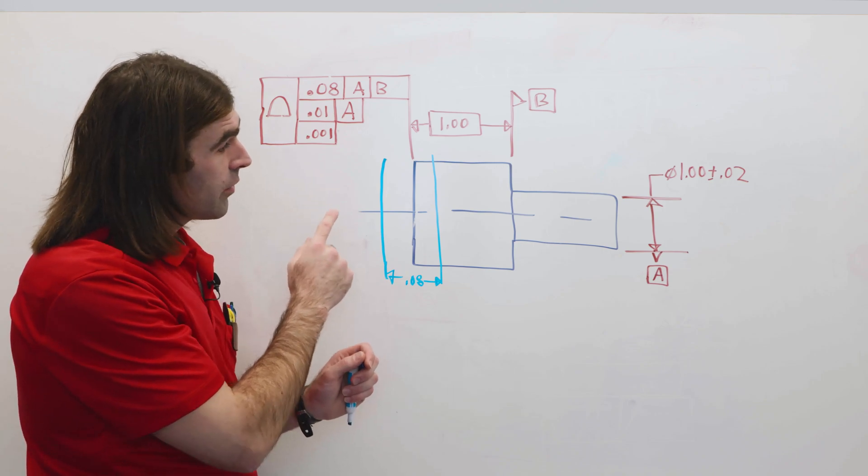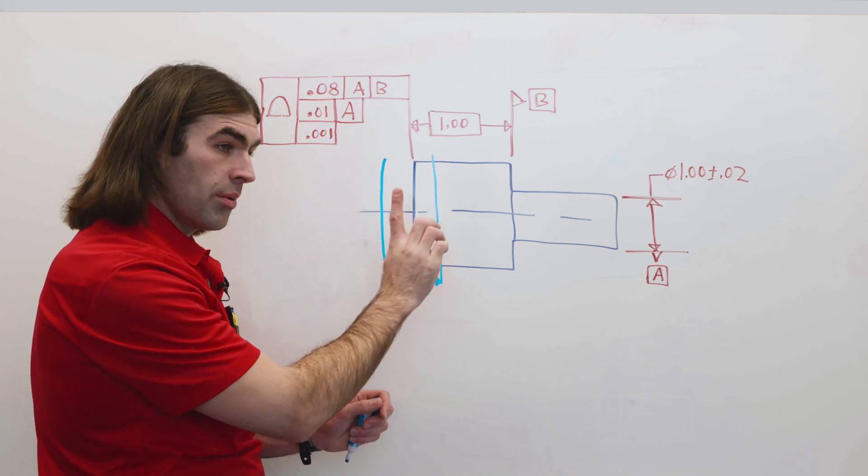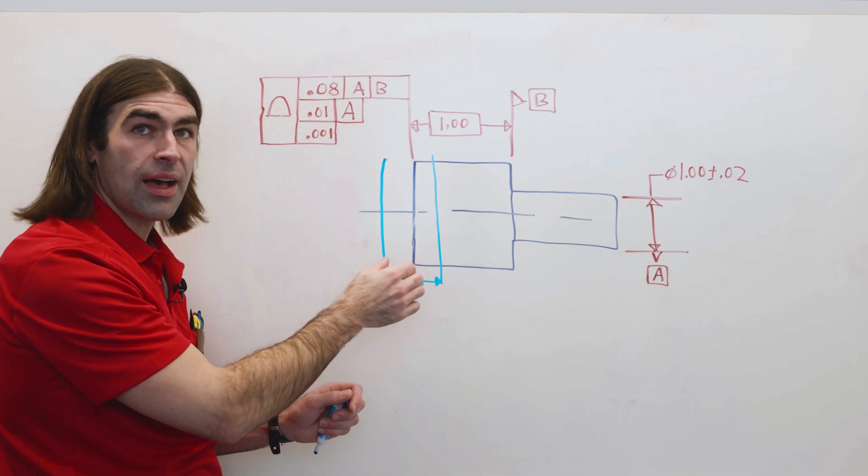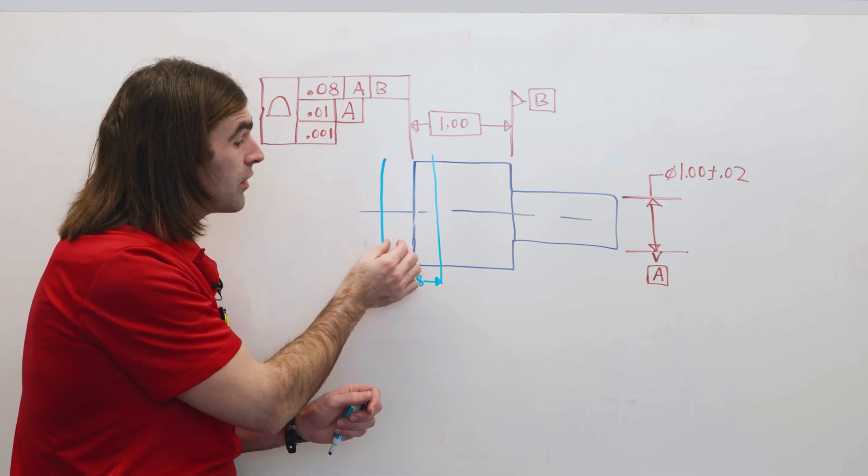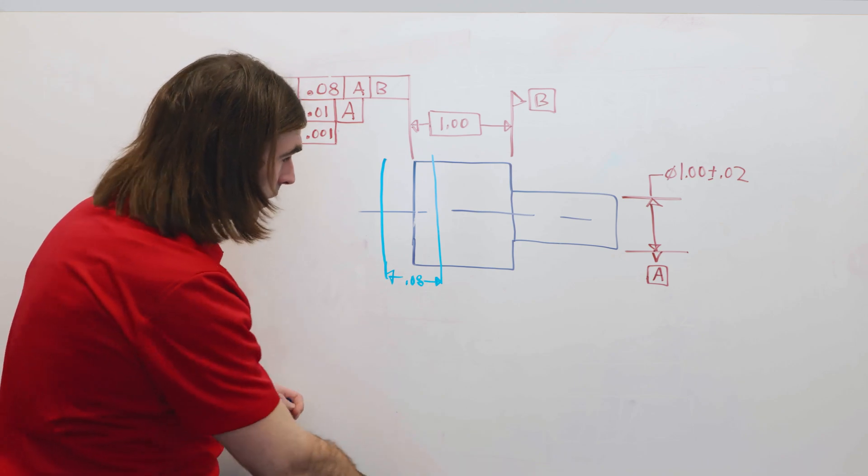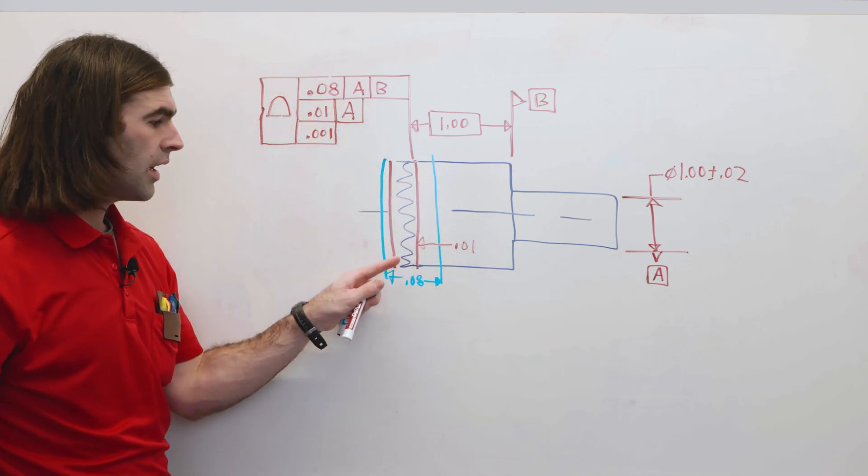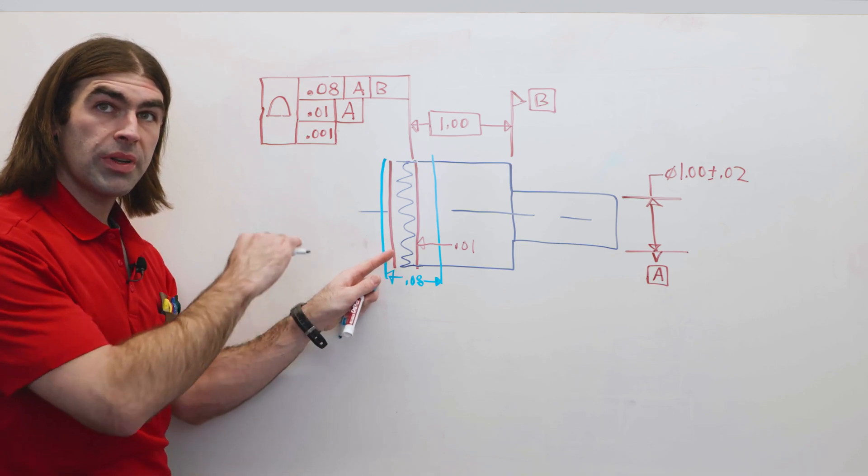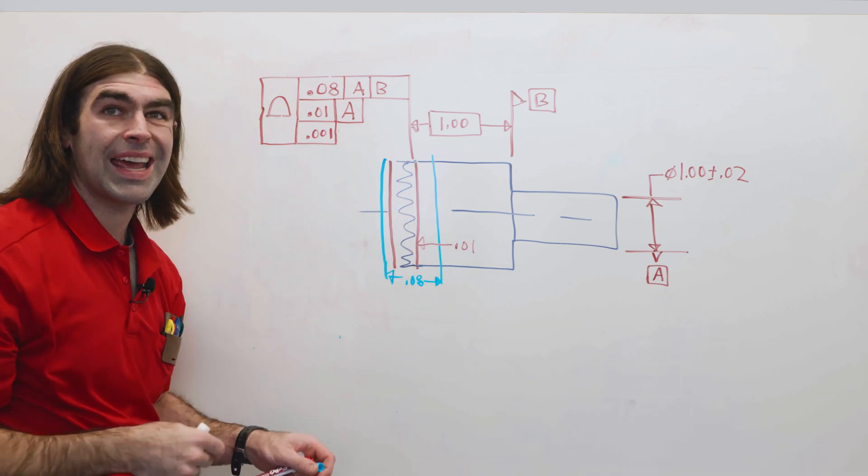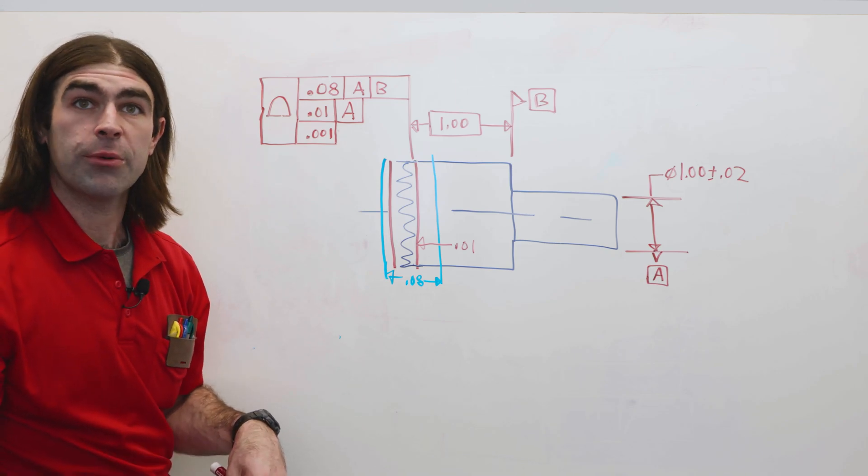So all this tolerance zone is saying is, okay, we've got to be within this 80 thousandths, but it's also got to be perpendicular to A to within 10 thousandths, but it's free to float anywhere within this tolerance zone. So we could draw a tolerance zone here, perpendicular to A, but it's free to float within that 80 thousandths tolerance zone and the surface of the part must lie within there.